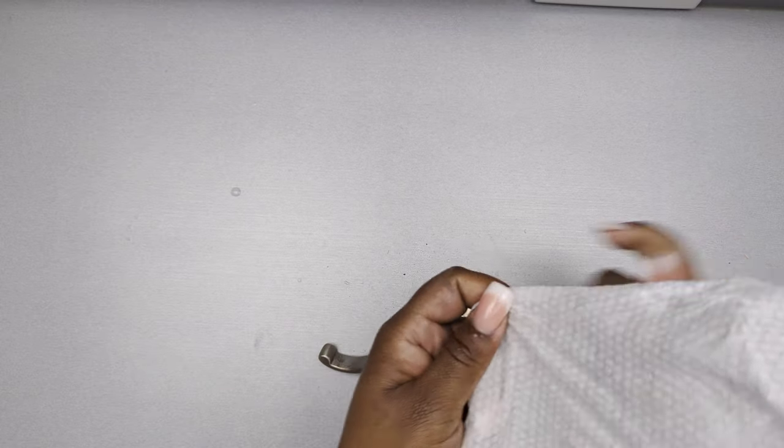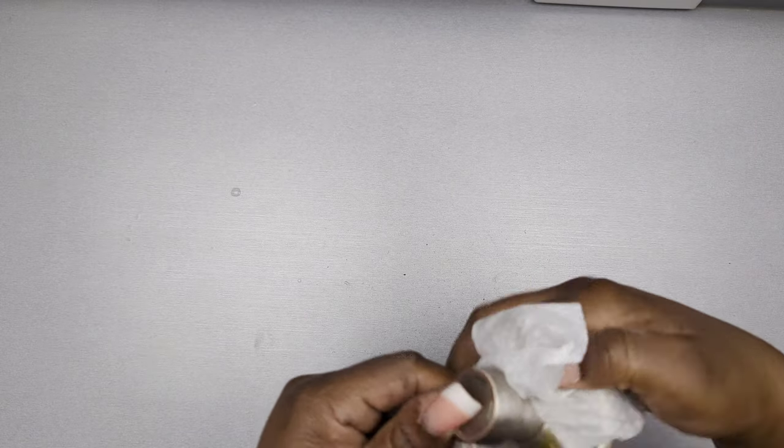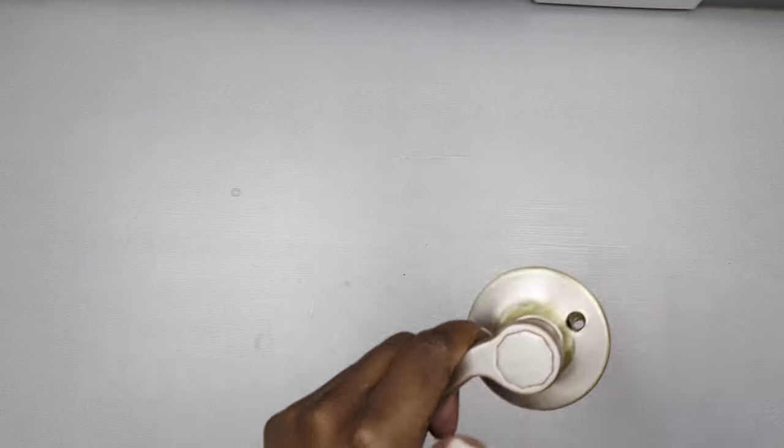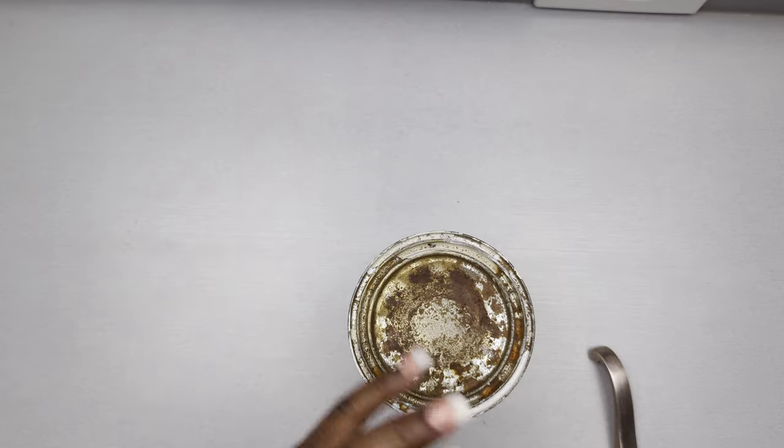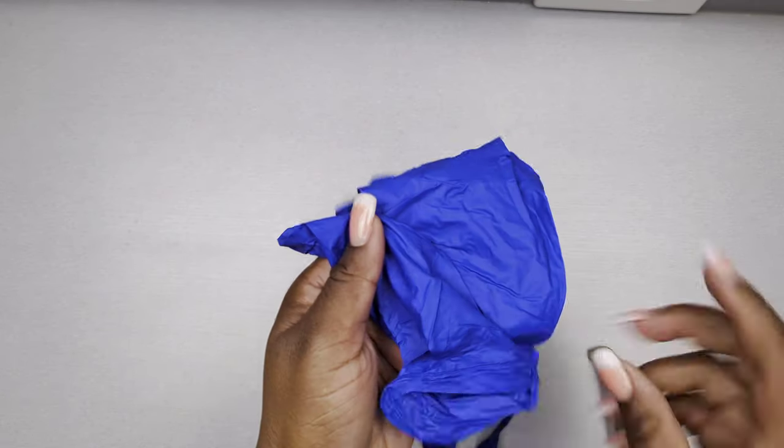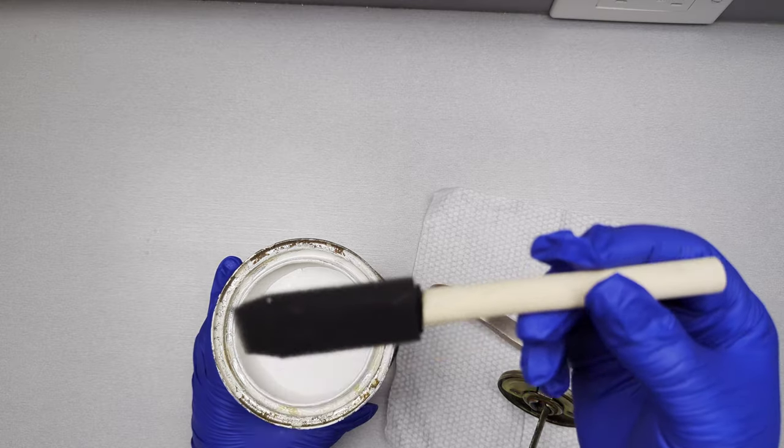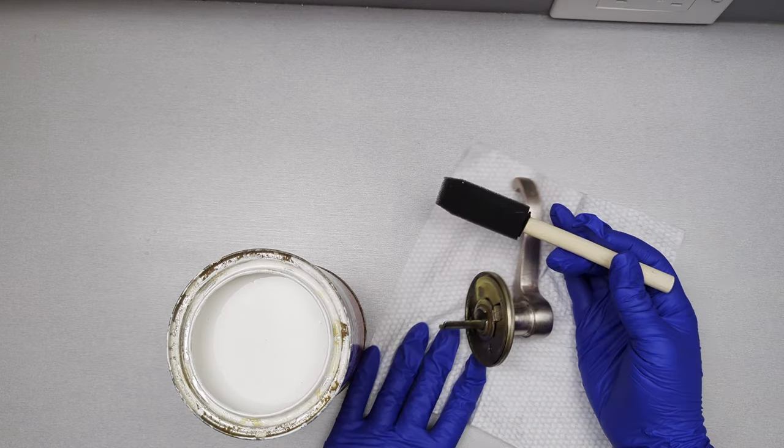I'm just using a wet cloth and cleaning up all the dust before I start painting. I'm going to be priming the area first. I'll be using my Kiehl's Original Interior Primer and this is a brush on primer. I'm going to be using my foam brush.